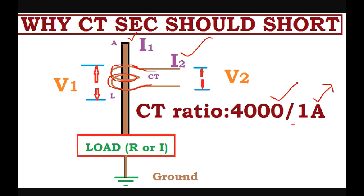If we have 1 amp secondary, it will be a ratio of 4000 to 1. Now let's talk about the load — we have a resistive load or an inductive load. What we have to do is connect the load. Let's take two parameters: V1 here.